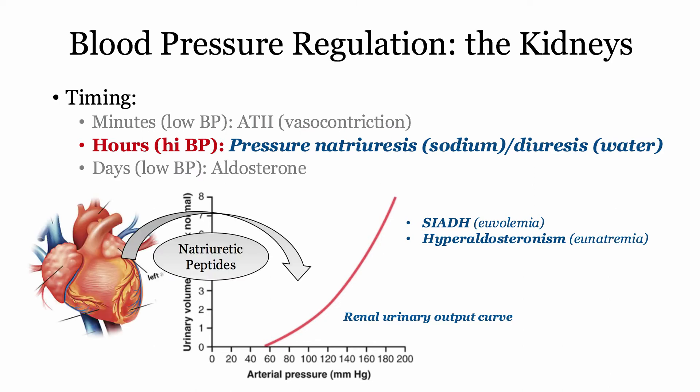A similar phenomenon is seen with excess aldosterone. There is a finite amount of sodium resorption that takes place before your kidney starts dumping the excess. And for completeness, recall the heart also responds to chamber stretch with release of natriuretic peptides, reviewed more completely in the heart failure videos. The natriuretic peptides play a role in controlling volume, but not blood pressure per se.